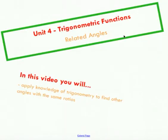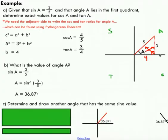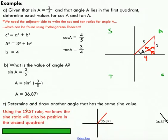Now that we've determined this unknown angle, we can start talking about the concept of related angles. As it turns out, if I were to rotate this terminal arm counterclockwise around the unit circle, there exists another angle such that the sine of that angle is identical to the sine of our original angle. Our goal here is to determine and draw that angle. The solution lies in the CAST rule — we know the sine ratio will also be positive in the second quadrant.